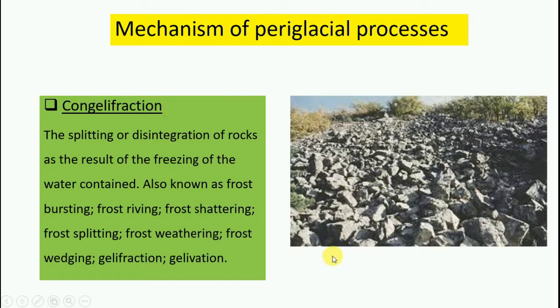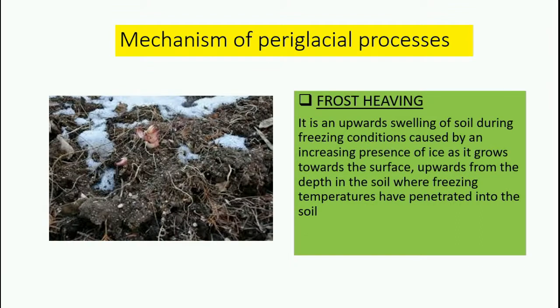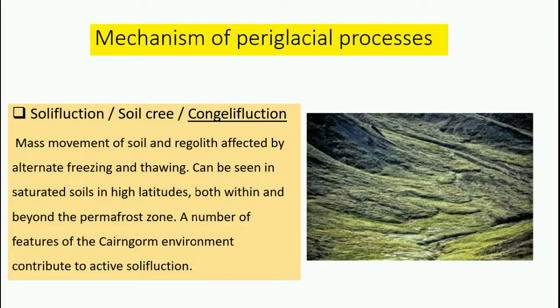The next mechanism is frost heaving — the upward swelling of soil during freezing conditions, caused by an increasing presence of ice that grows towards the surface upward from the depth where freezing temperatures have penetrated. Frost heaving is connected with the freeze-thaw cycle but is given a separate entity as it helps in moving coarse grains upwards. Frost heaving can be seen in the active layer.